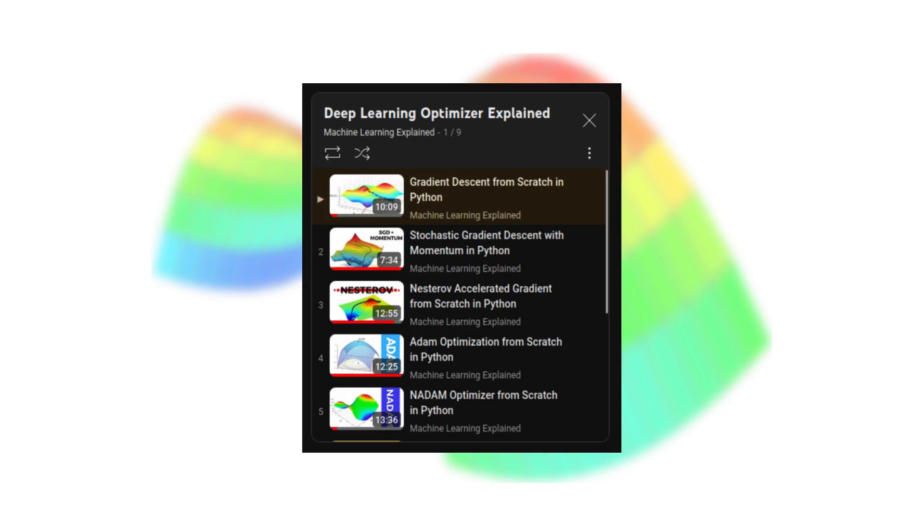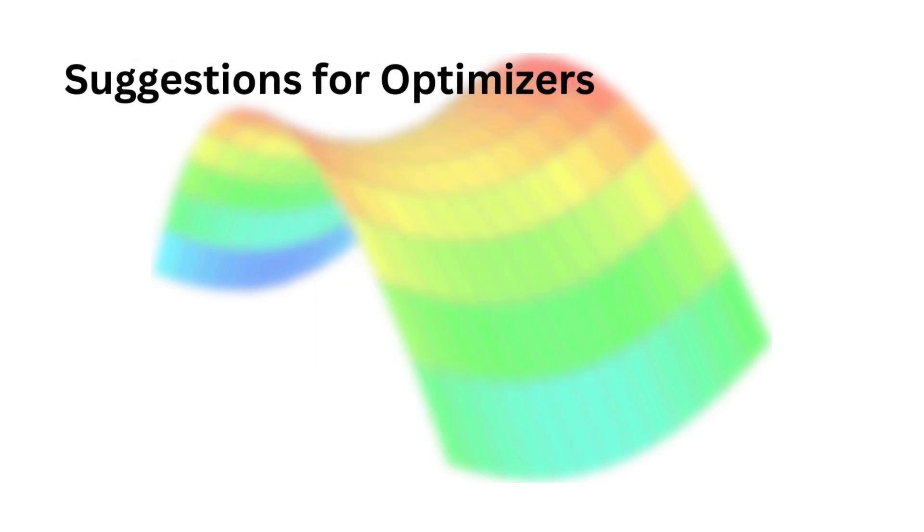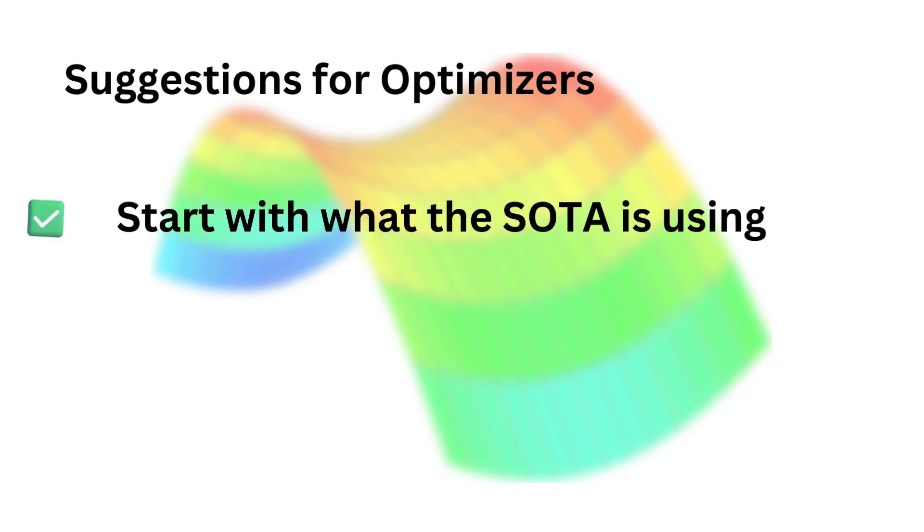You will see they aren't that complicated, and the important part is that they are all building upon each other. So we start with stochastic gradient descent, and then you add momentum, and then you add a bunch of stuff, and then you end up with Adam and the current modern optimizers.